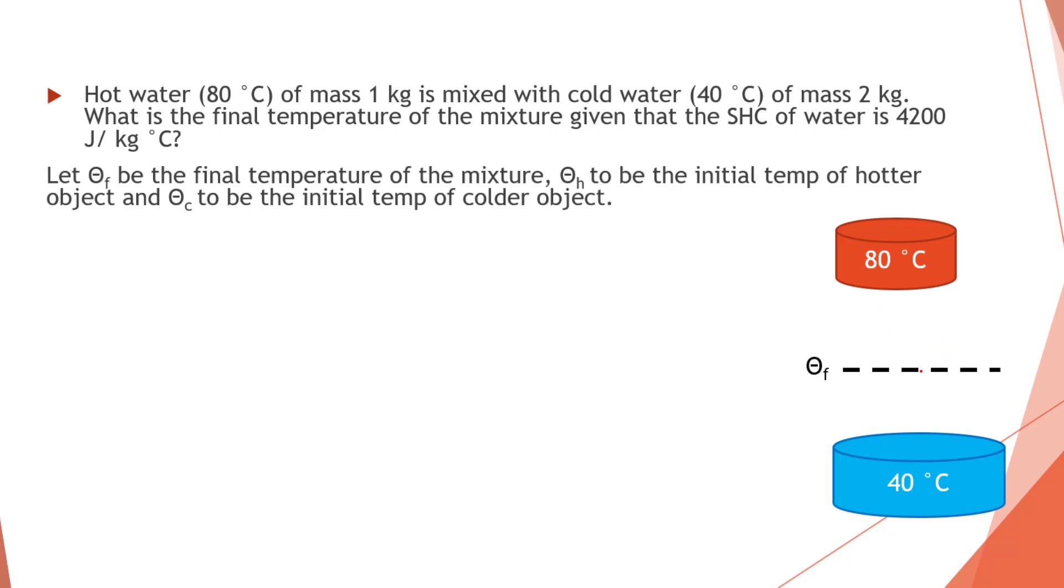So same, we apply the same thing. Delta F is the final temperature, which is just arbitrary. It's in between 80 to 40. Again, loss equals gain, which is very similar to the previous question. So this is a loss by the hot object. This is gain by the colder object.